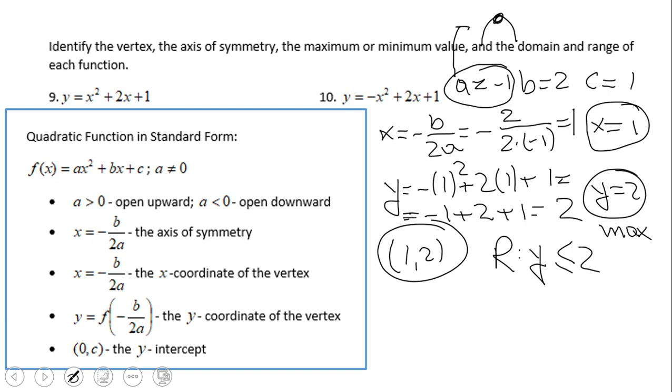If you have this answer for number 10, then you did a great job. As you notice, a is negative 1 in this case, which tells us the parabola is open down. B is 2 and c is 1. By doing the quotient negative b over 2a, we get x equals 1, which is the axis of symmetry and the x-coordinate of the vertex.